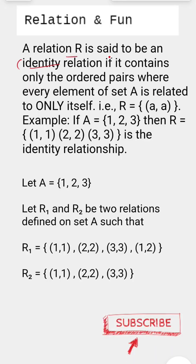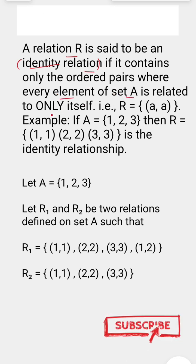A relation R is said to be an identity relation if it contains only the ordered pairs where every element of set A is related to only itself.